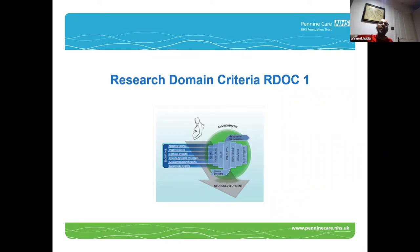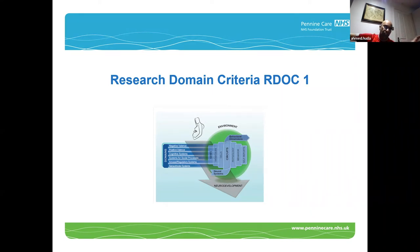RDoc has rows of genes, molecules, cells, circuits, physiology, behavior, and self-reports — which is very biologically focused — and then shows how development and environment affect those. You're basically analyzing problems by identifying changes in circuits, genes, cells, and how that affects behavior and self-reports. It looks at things like negative valence, positive valence, and cognitive symptoms.